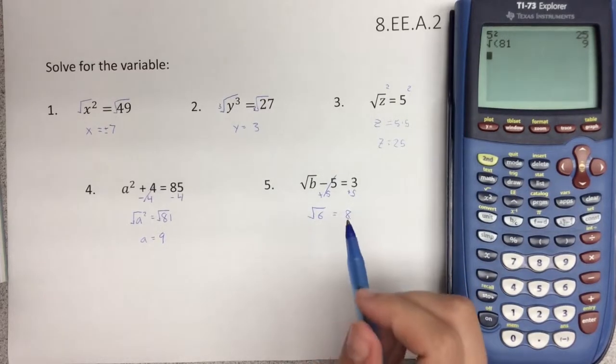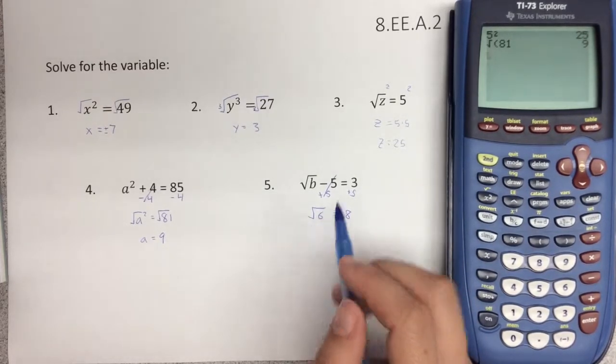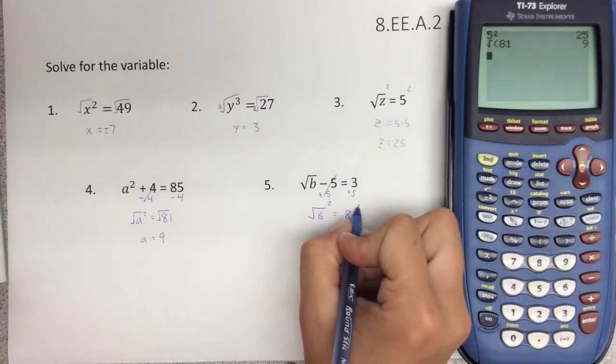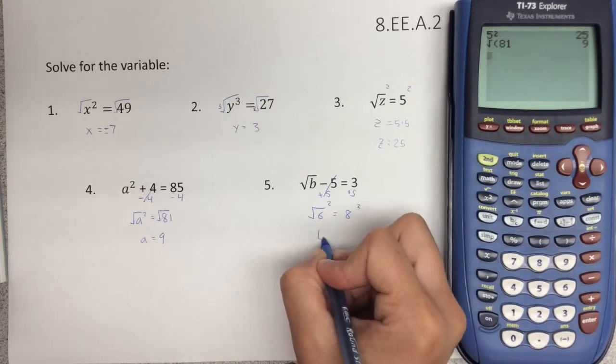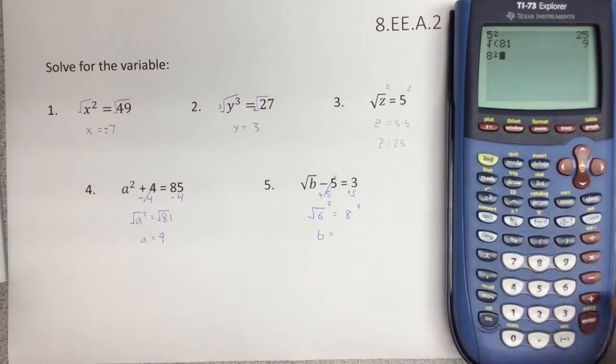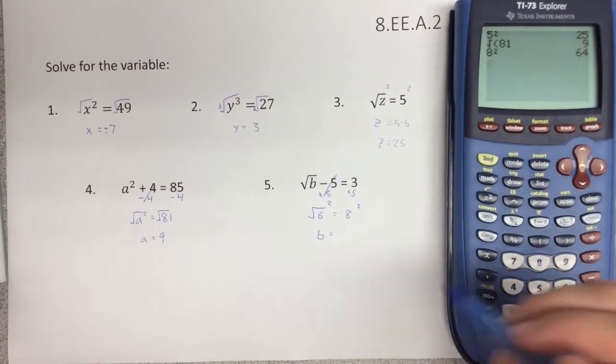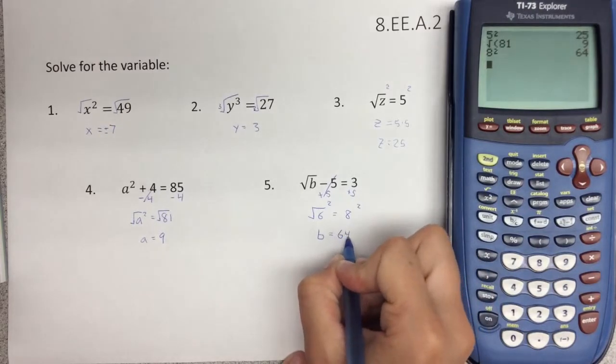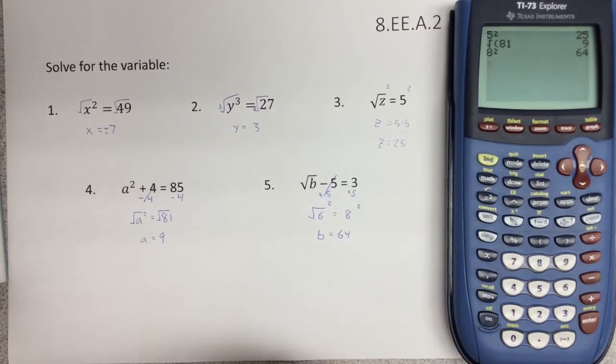And now, in order to solve for this, the opposite of a square root is a square. So we're going to square both sides, leaving us with b equals 8 squared, which is 8 times 8, which equals 64. So b equals 64. And now, you know more.